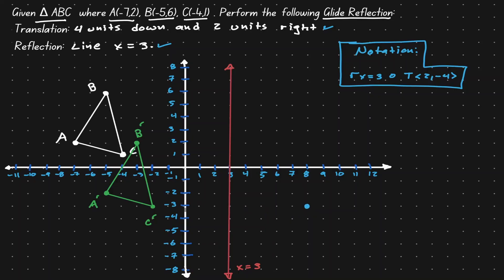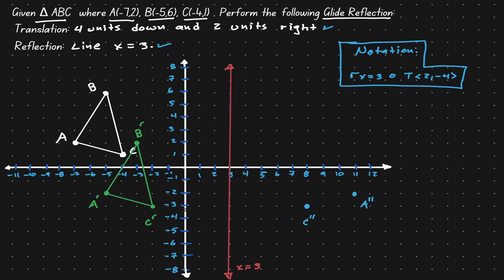We call that point C'', since this is the location after two transformations have been performed on point C. Now reflecting point A': it is eight units away from the vertical line, so after reflection it should be eight units away on the other side, giving us (11, -2) — we call that A''. Finally, reflecting B': it is six units away from the vertical line, so after reflection we end up at (9, 2) — we call that B''.